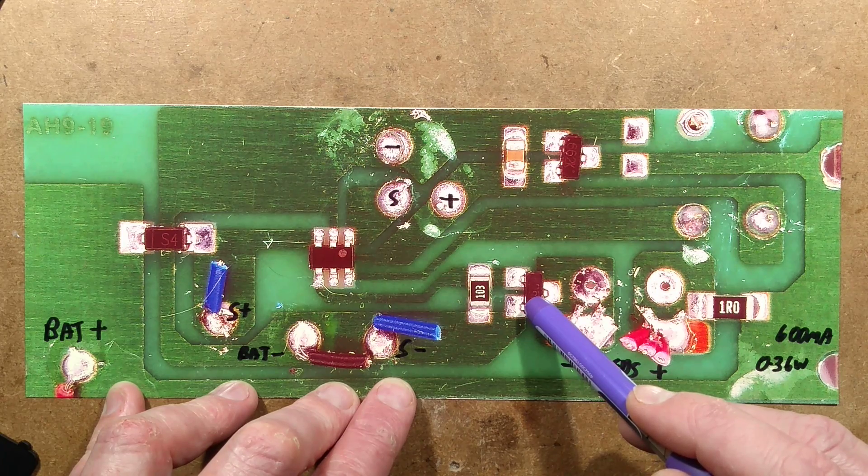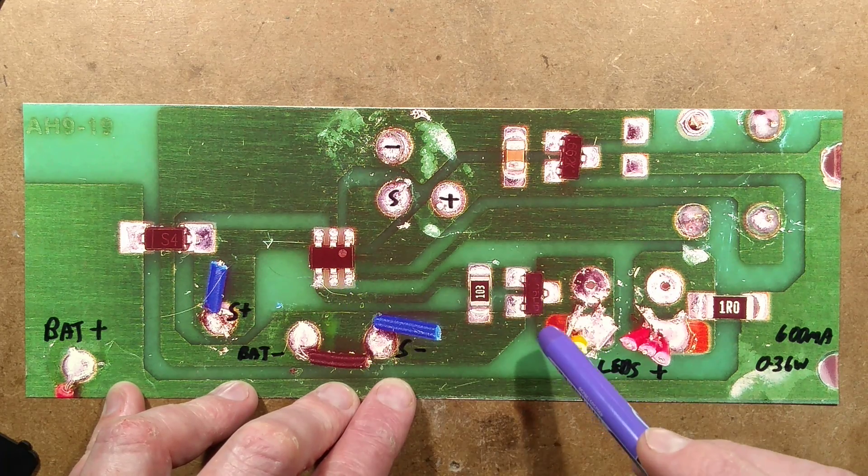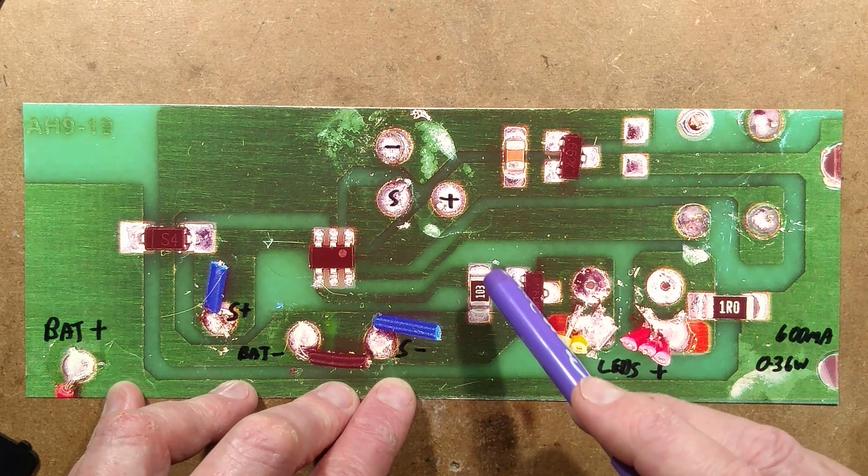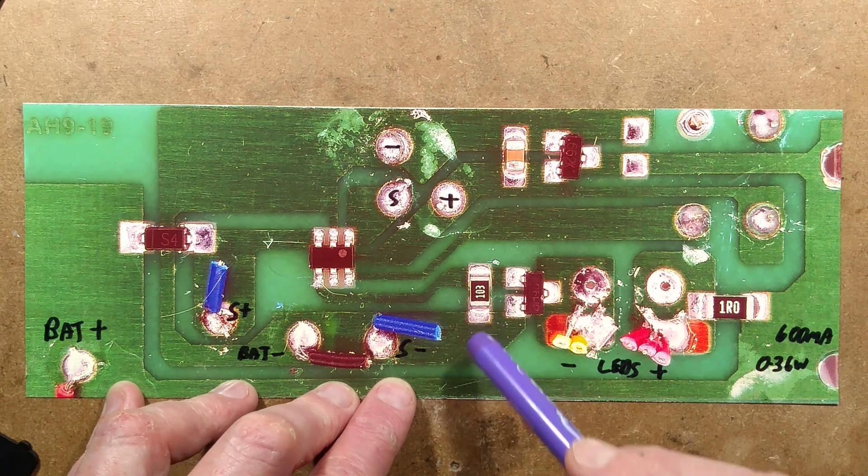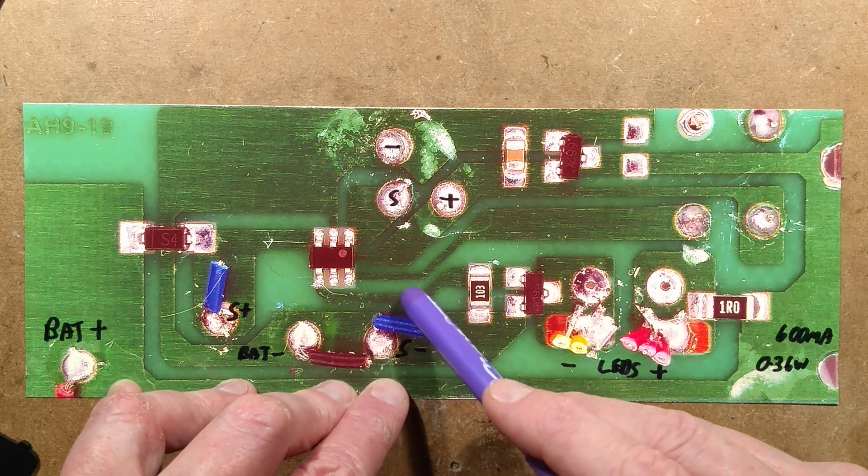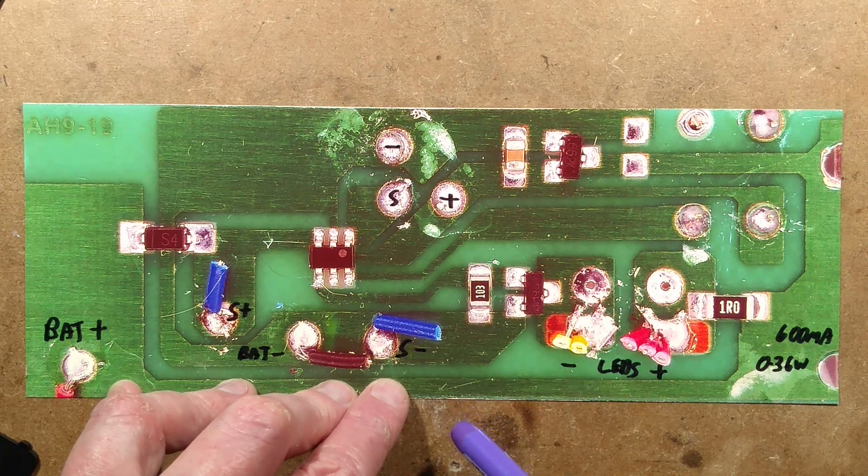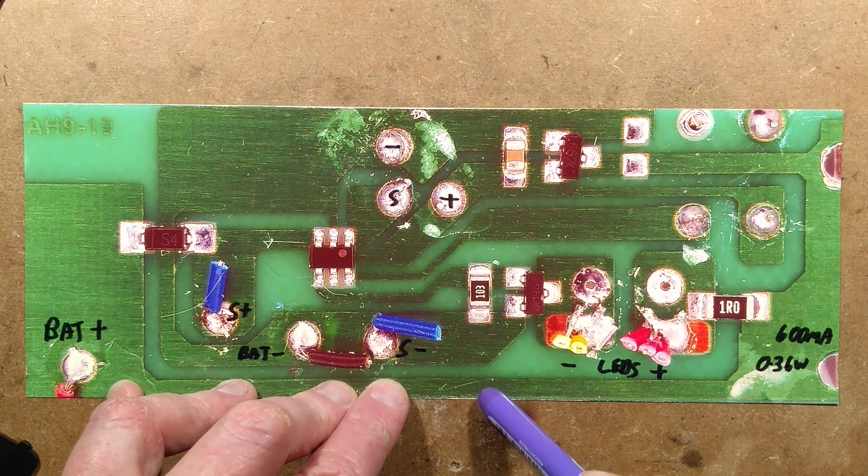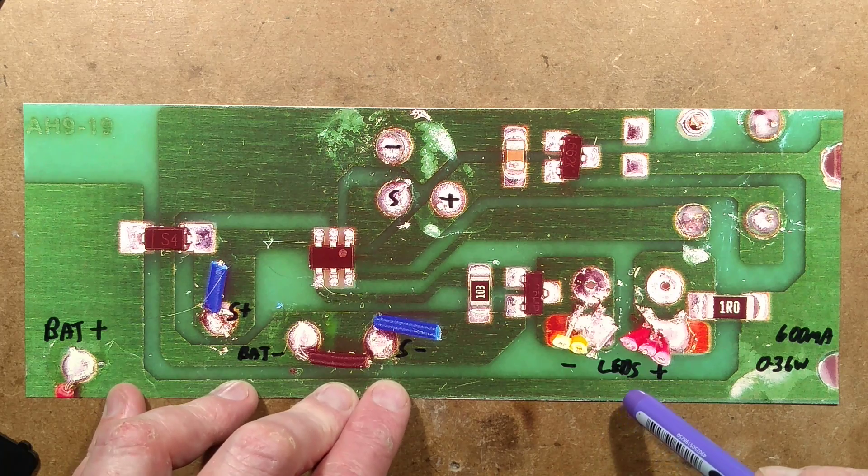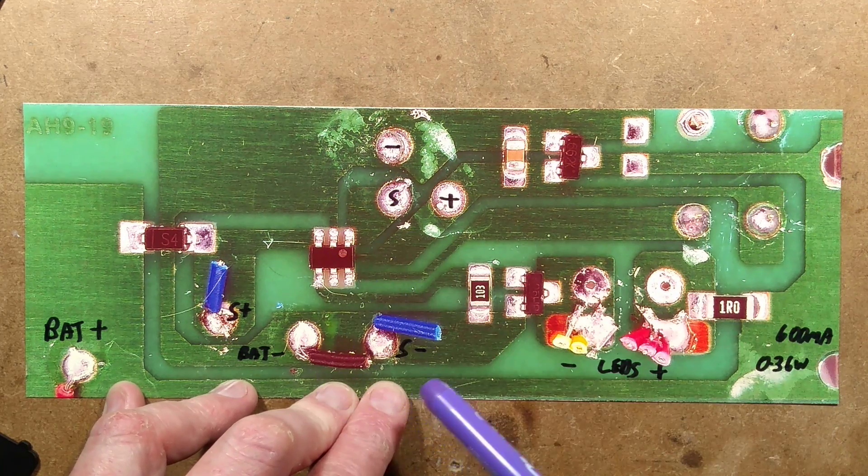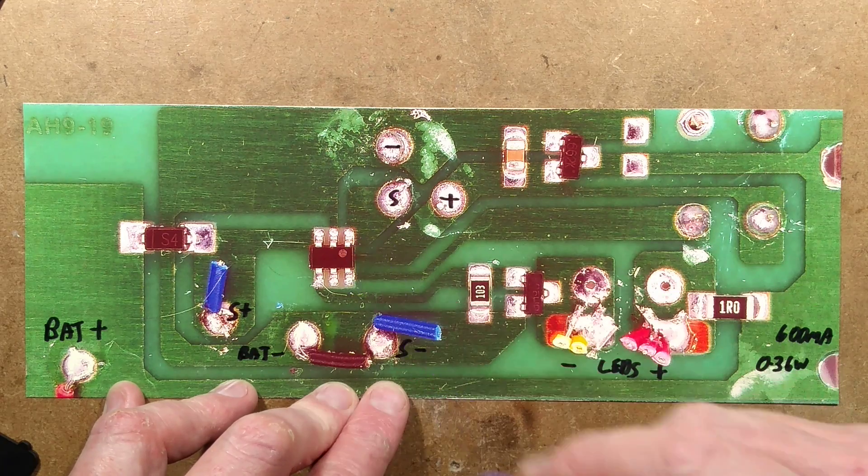The output of the microcontroller can control the LEDs which have current limiting by a 1 ohm resistor. It runs LEDs at about 600 milliamps, 0.36 watts. That's controlled by a little FET, probably, because it's been driven directly from the microcontroller with a 10k resistor from the gate to the negative rail.